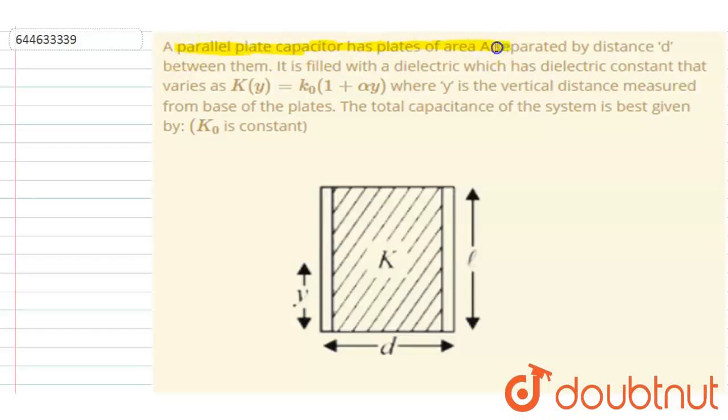has area A separated by distance d between them. It is filled with a dielectric which has dielectric constant K(y) = K₀(1 + αy), where y is the vertical distance measured from the base of the plate. The total capacitance of the system is best given by